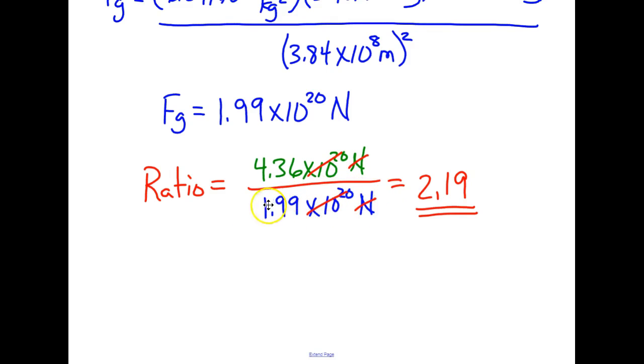So we put the Sun and the Moon in the numerator, 4.36 times 10 to the 20th Newtons. We put the Earth's attraction force, 1.99 times 10 to the 20th Newtons. The times 10 to the 20th cancels, as do the units for Newtons. So our ratio comes down to 4.36 divided by 1.99. We get a ratio of 2.19.